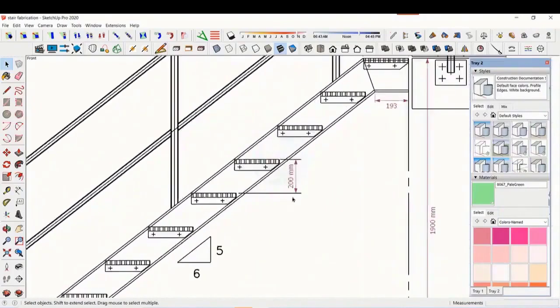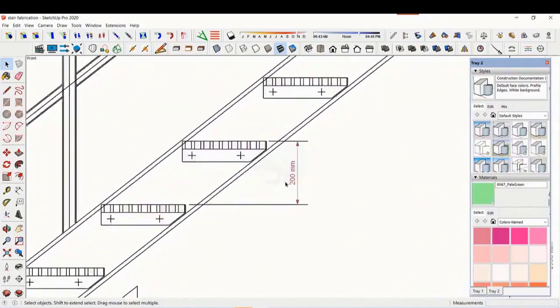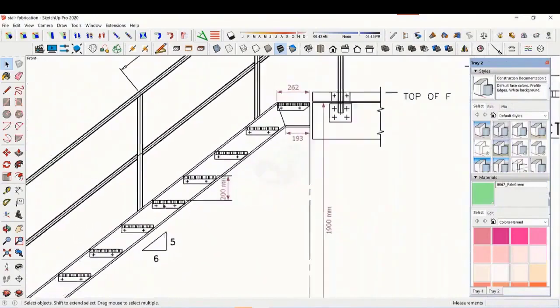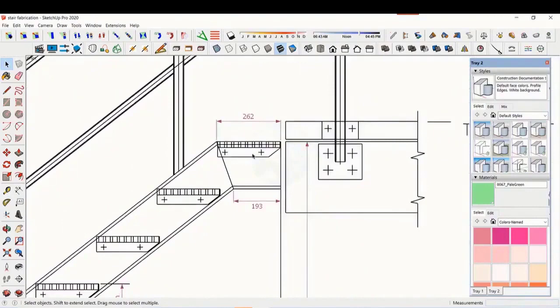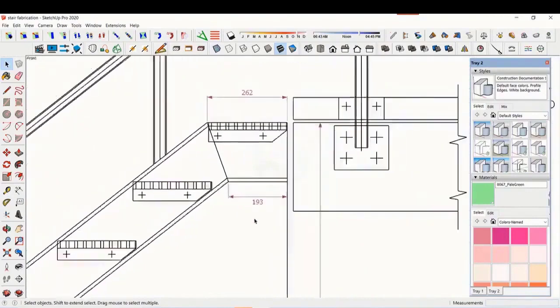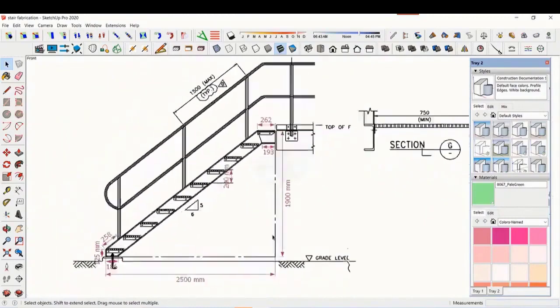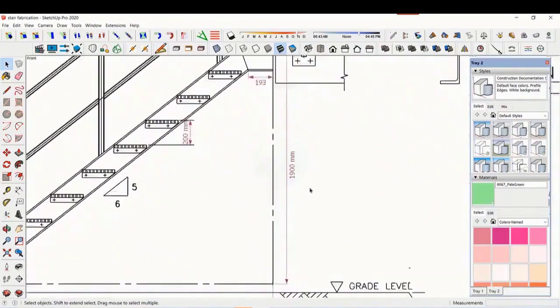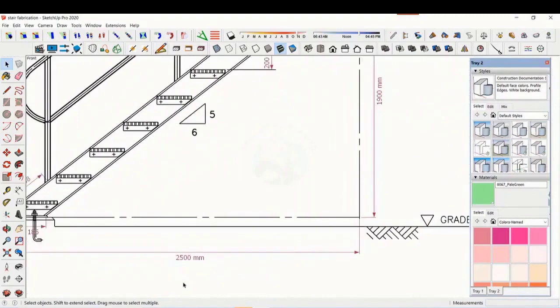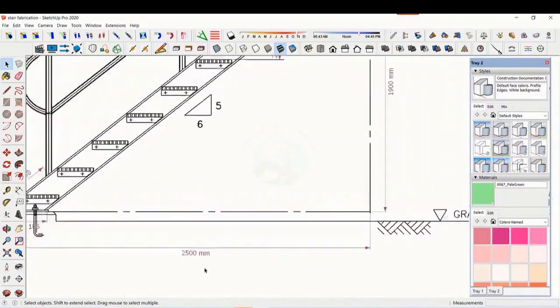The basic structure is made from ISMC 200. The height of the staircase is 1900 mm and the length is 2500 mm. The width of the staircase is 750 mm.